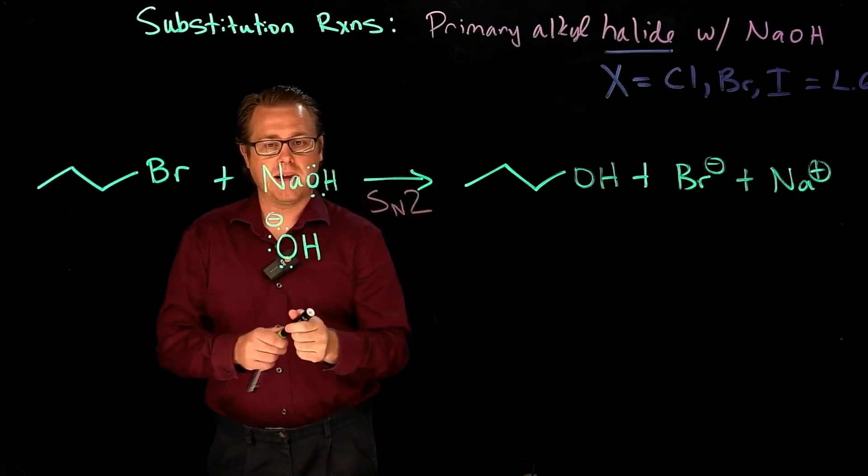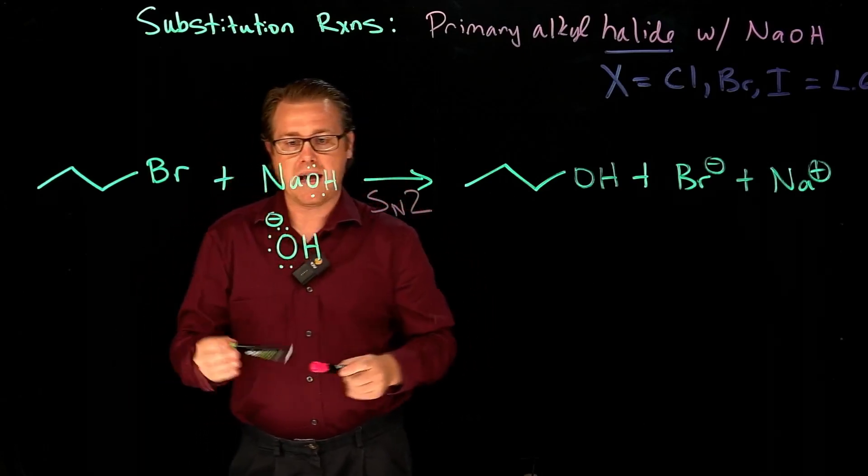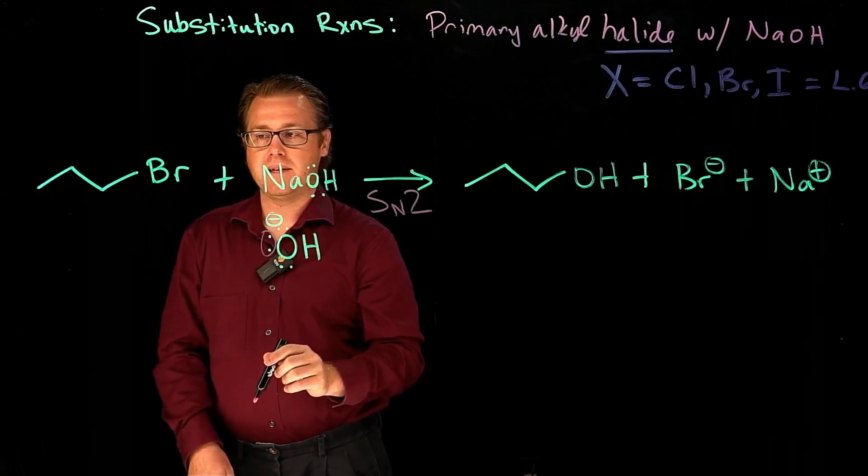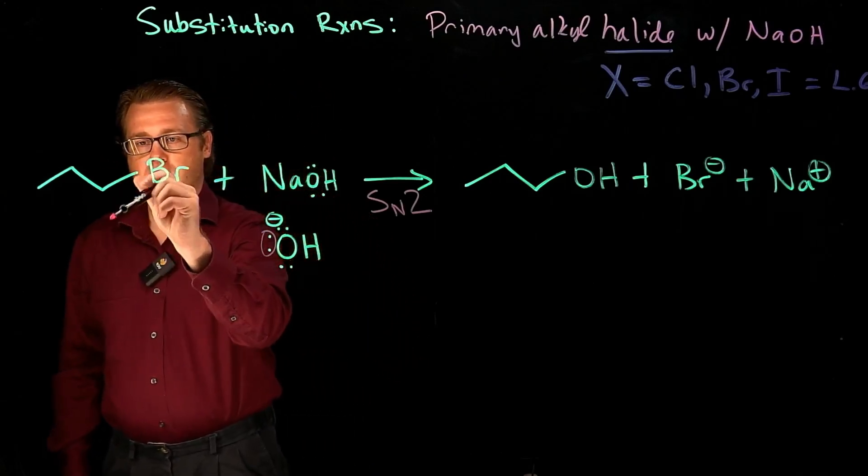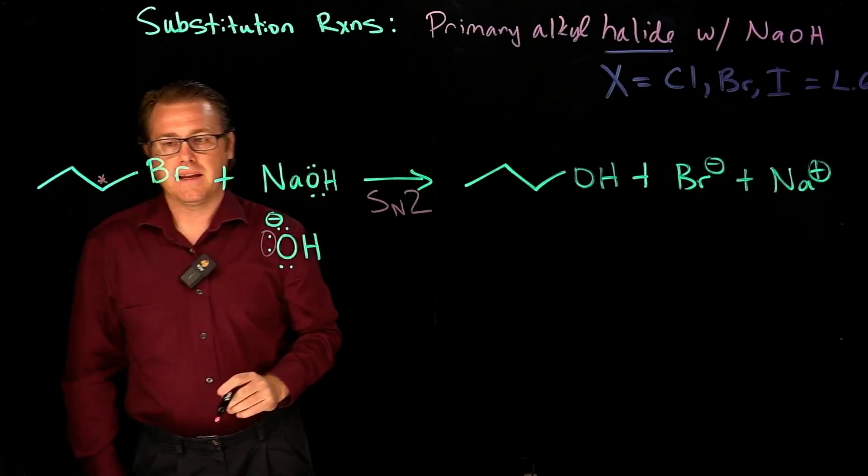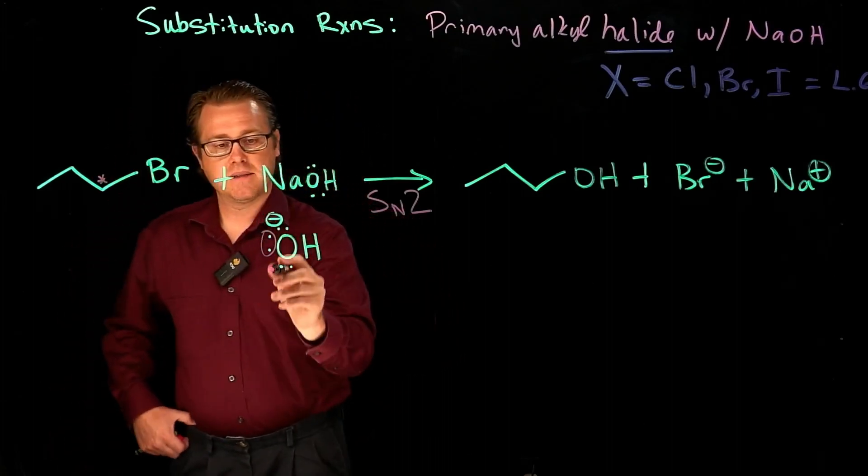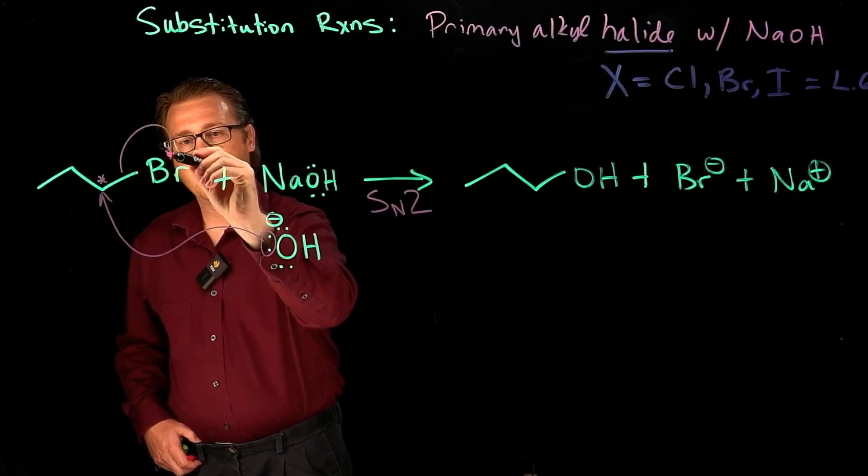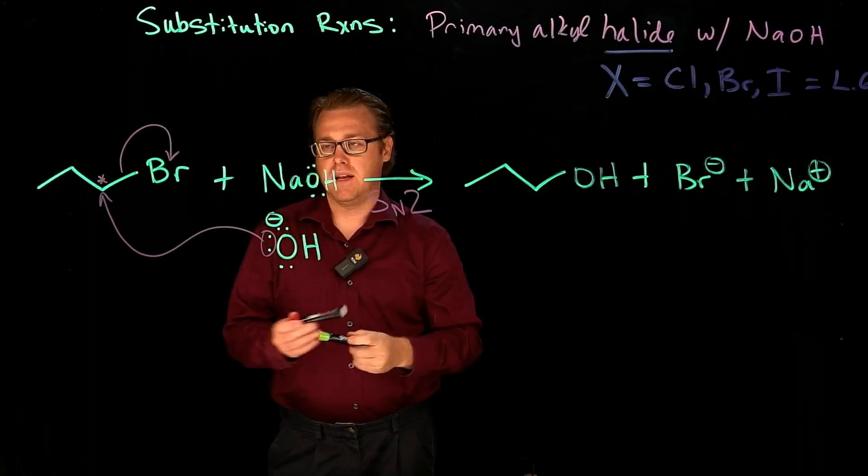And the way that SN2 mechanism works is that we take a lone pair off of the electron-rich species. We see that this carbon here is the electron-poor species. And so that's just going to come in SN2 style and kick off the leaving group.